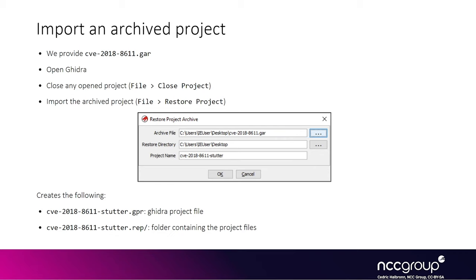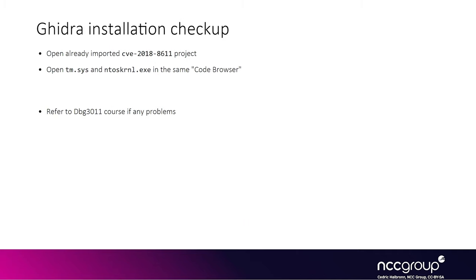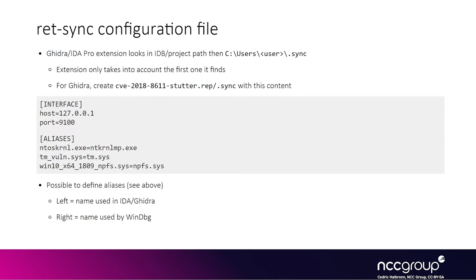Ghidra should already be installed from the DBG3011 course as well, but you are going to need to import the Ghidra project related to this exploit course, which contains the DLLs and executables required. After importing, you should have created a GPR project file as well as a .rep folder containing all the project files. We are going to need to open the different kernel binaries and drivers into the same code browser so we can use RedSync correctly.